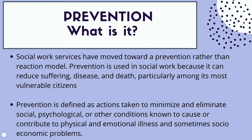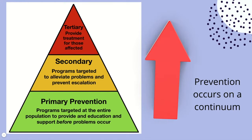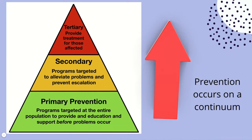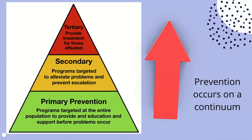The first stage in prevention is primary prevention. Prevention occurs on a continuum. You start at the bottom with the biggest block because primary prevention is going to target and help the most amount of people. It's not going to catch everyone, so as we move up the triangle we move into secondary prevention, where some people may have developed symptomology or may be at higher risk. We want to target that so we don't have to move up to tertiary prevention, which is more individualized because fewer people are affected.